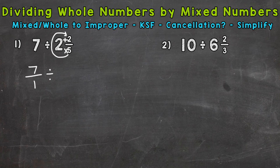So we do 5 times 2, which is 10, plus 2, which gives us 12. That's our numerator. We keep our denominator of 5 the same. Now that we have our problem rewritten, changing our mixed and whole number to improper fractions, we're able to move to the next step, which is KSF — Keep, Switch, Flip — the steps of dividing fractions.